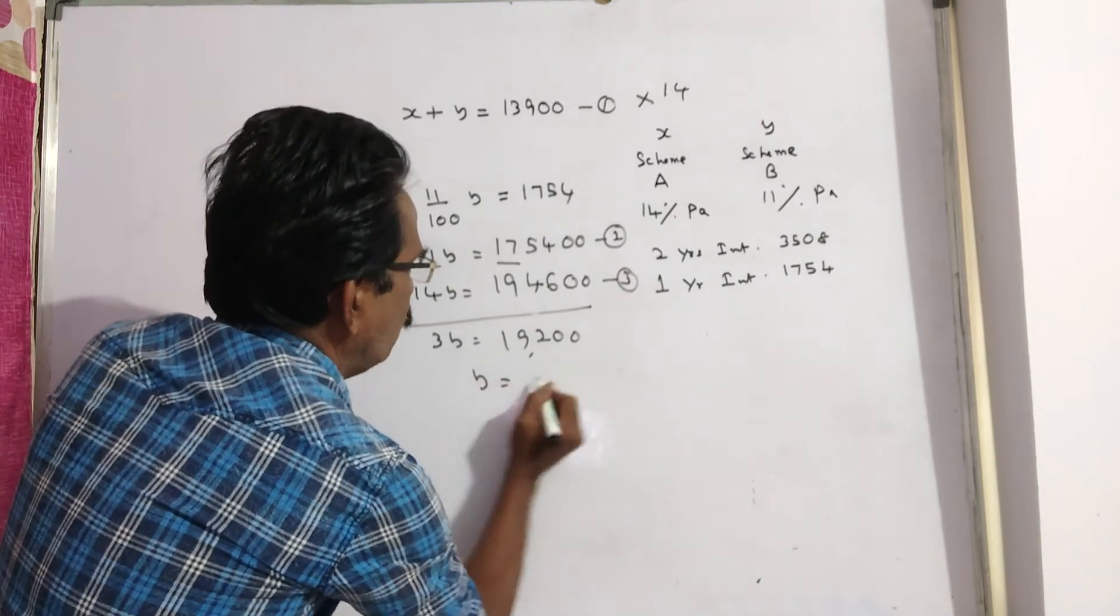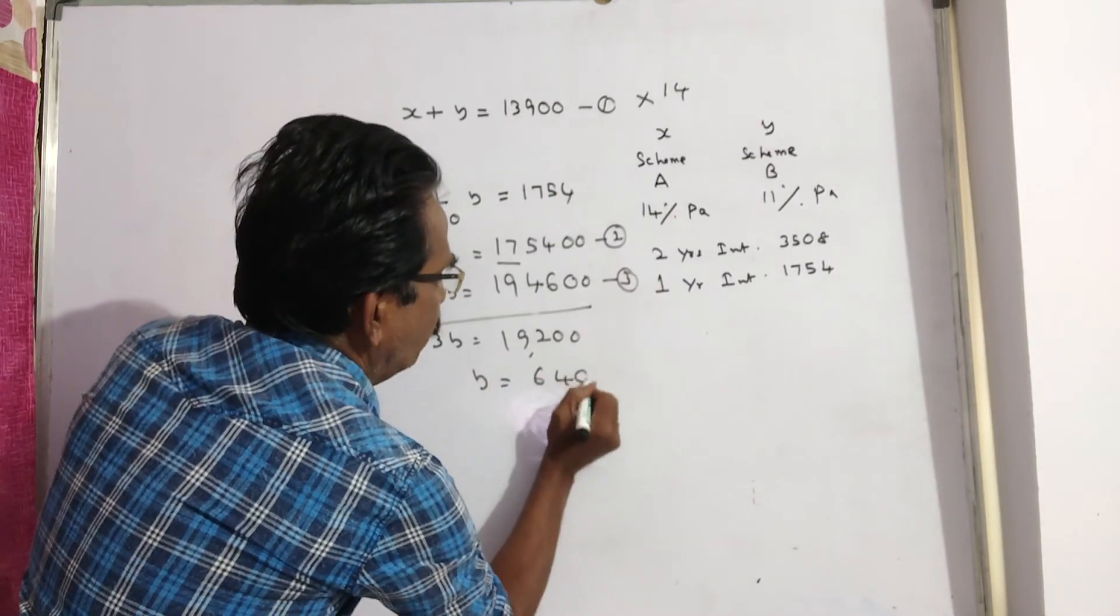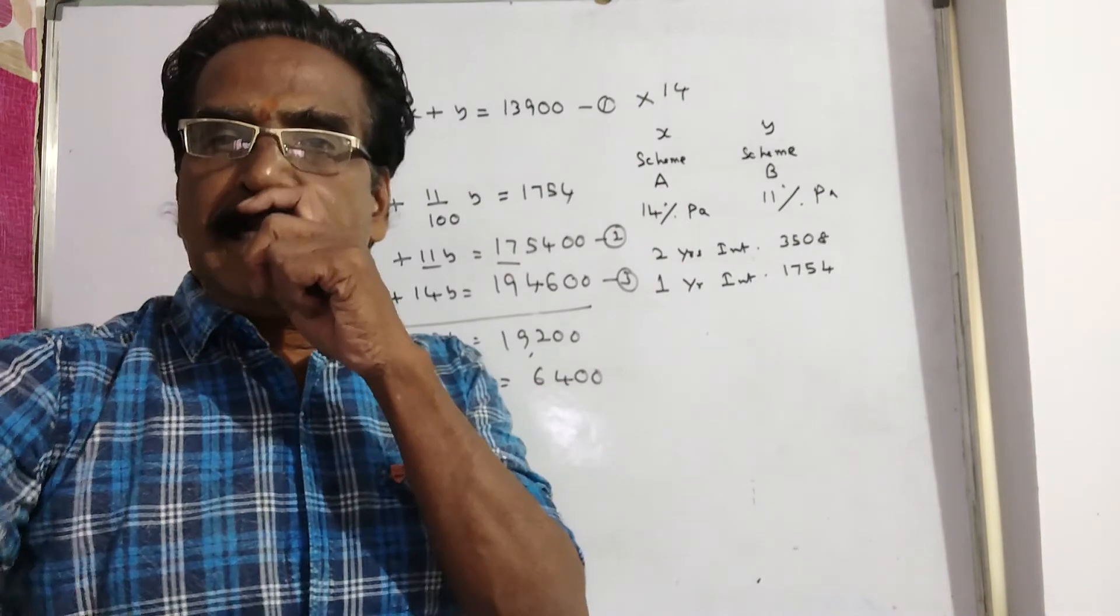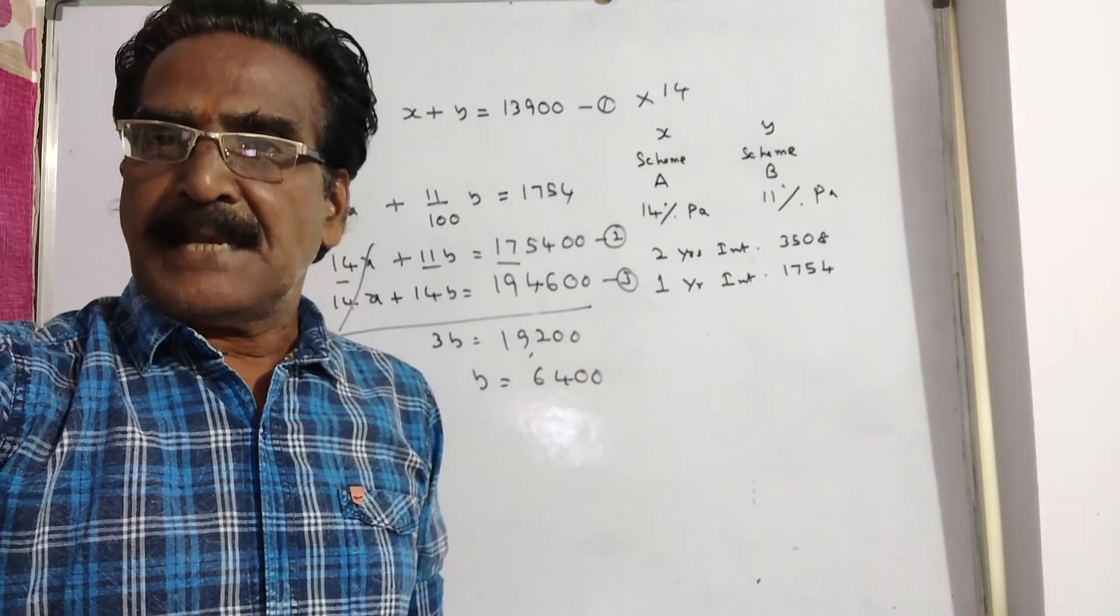Then Y is equal to 6,400. That is the sum invested in scheme B.